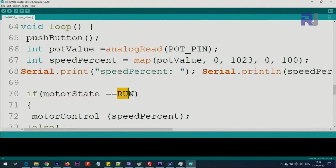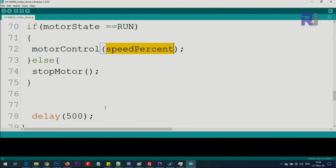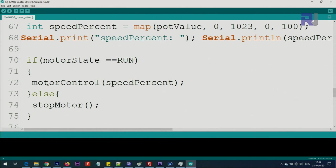Then we check the state of motor. If it is equal to run, this is two equal signs, then we say motor control with speed percent. The value that is here we will pass it. Else there is a function motorStop - motor will stop. We have 500 millisecond delay and the function will continuously take action.